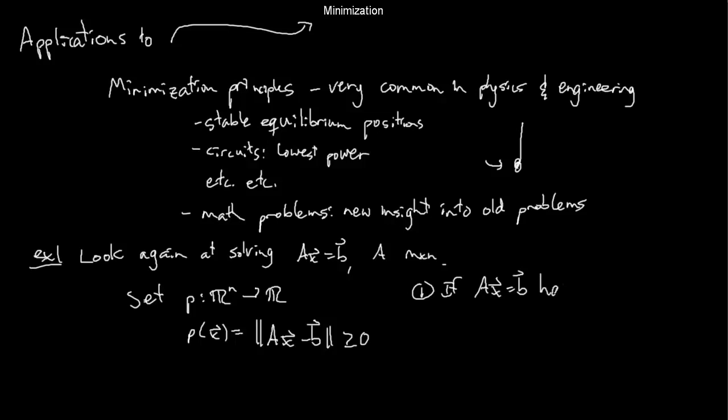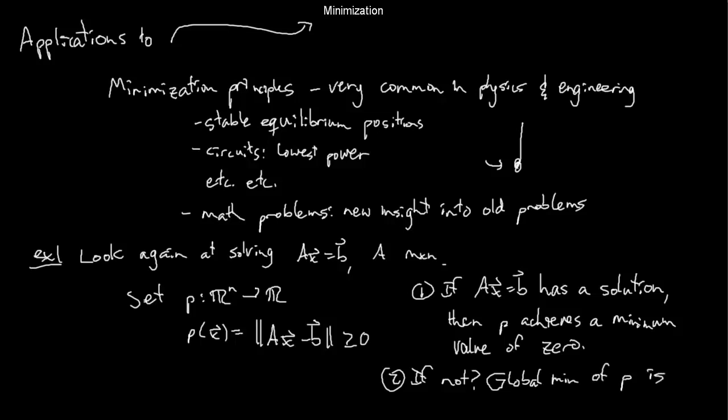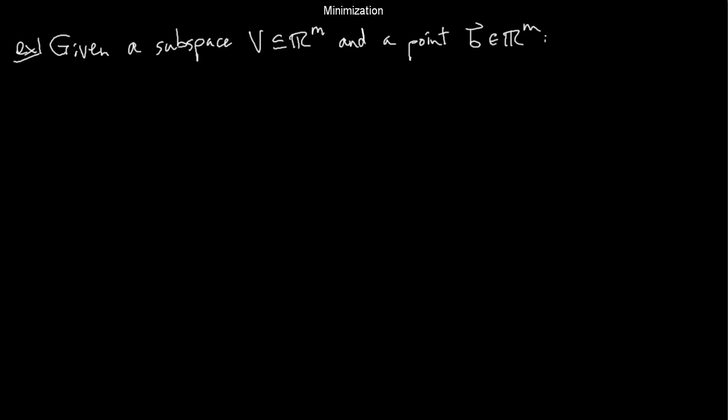If Ax = b has a solution, then p(x) is zero at that solution. This function, which is non-negative, would actually have a zero. That would have to be a global minimum. If it has lots of solutions, then it would have lots of global minimums. On the other hand, if Ax = b doesn't have a solution, p still has a global minimum. That global minimum is called a least squares solution to the problem Ax = b.